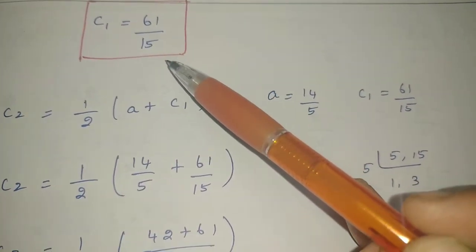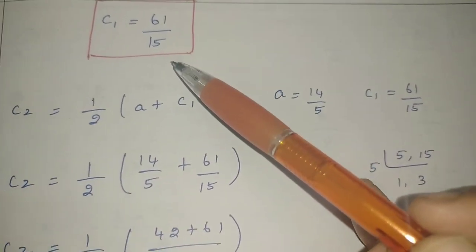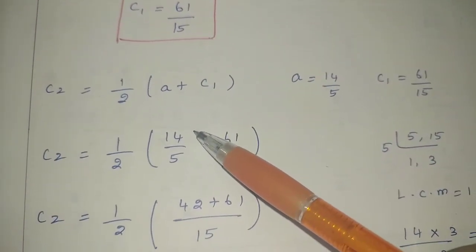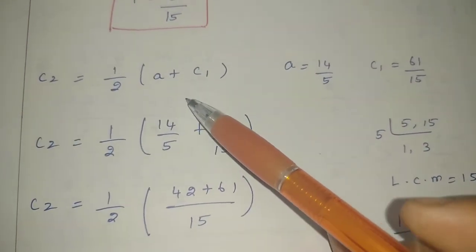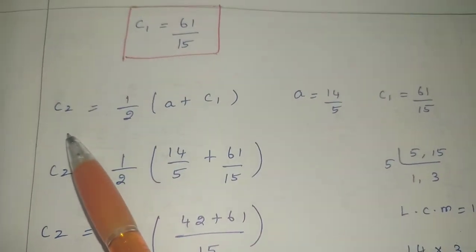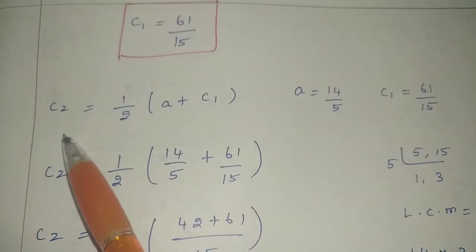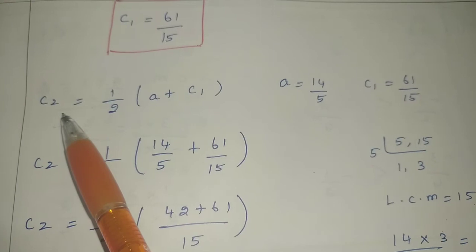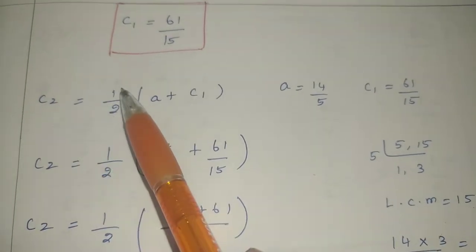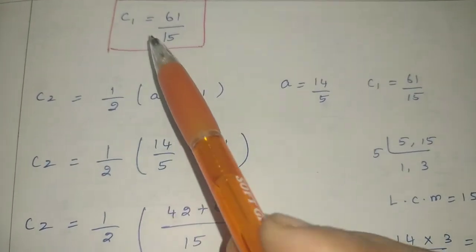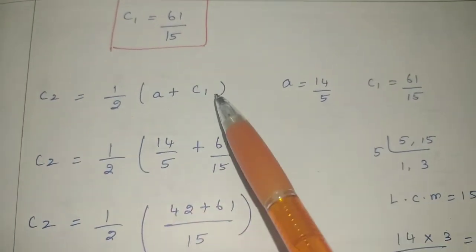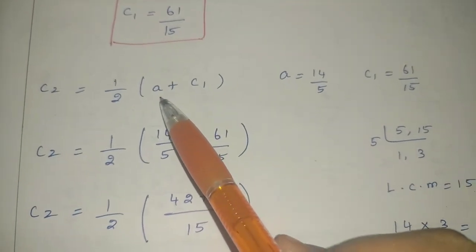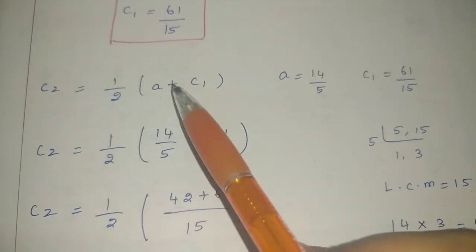Why do we need 2 rational numbers? Because the question asks for 2 rational numbers. So we have to find C2 as well. C2 is equal to half into A plus C1.